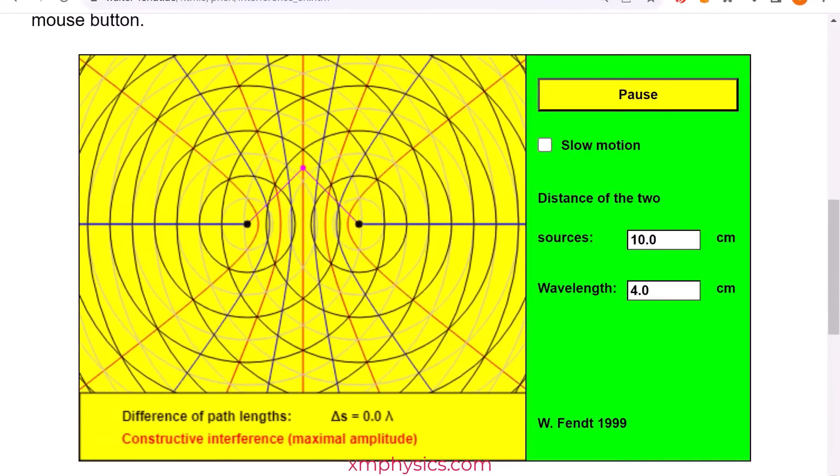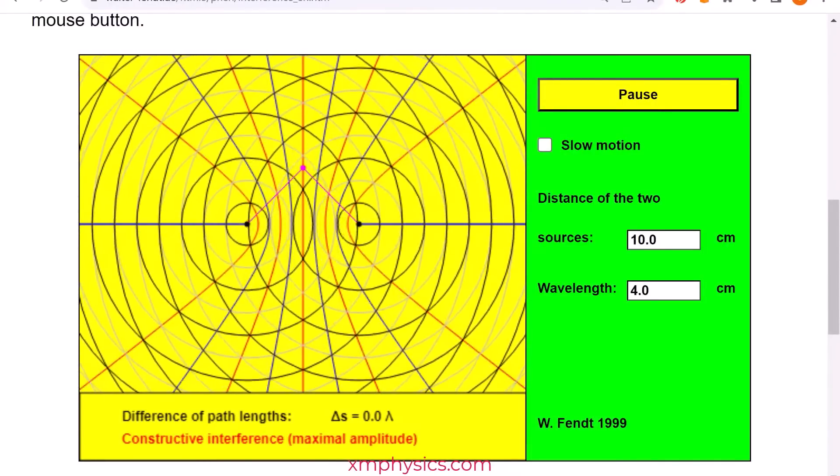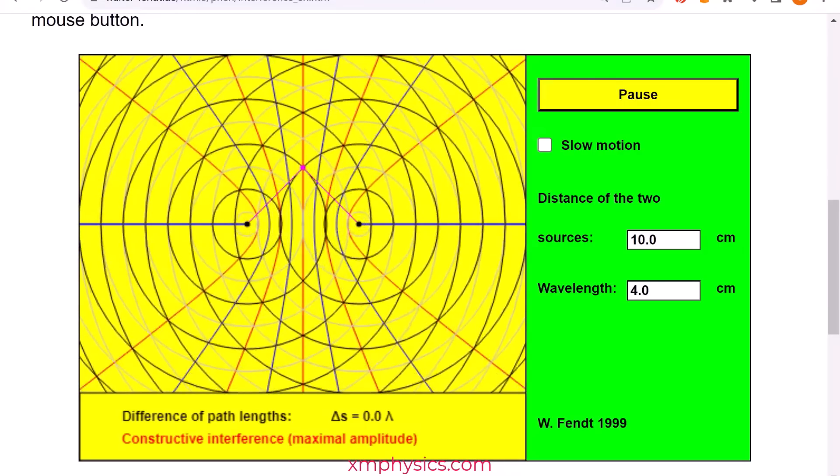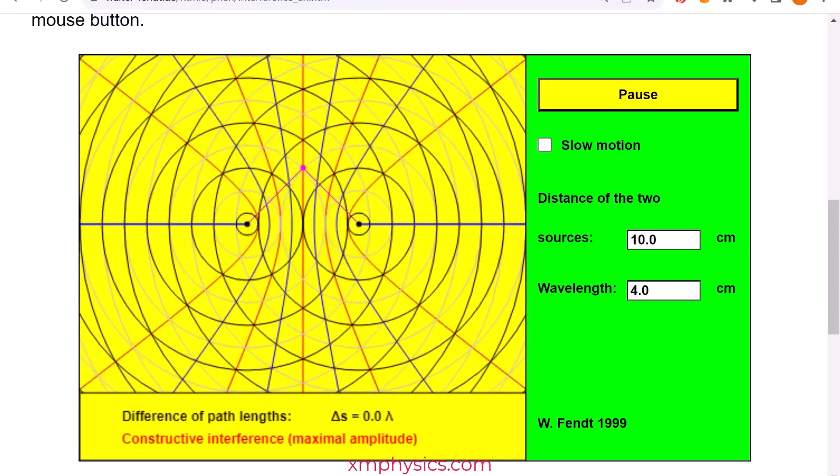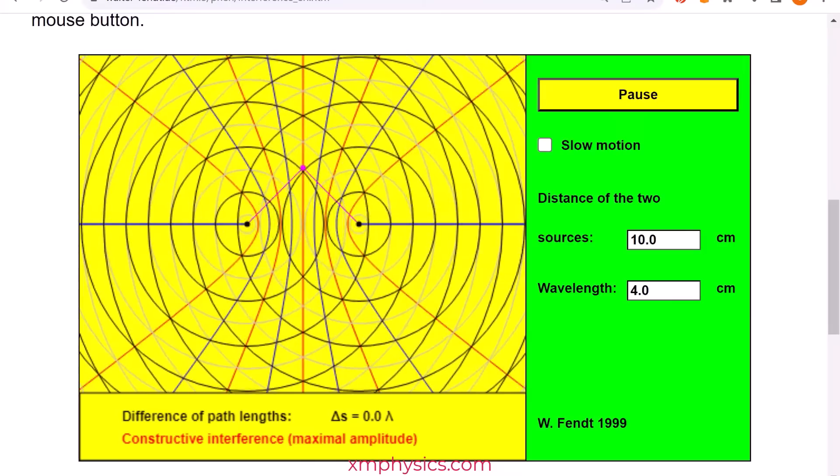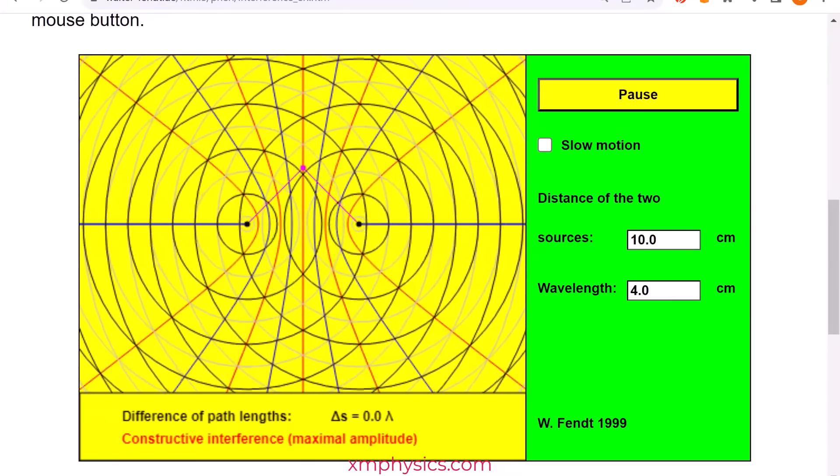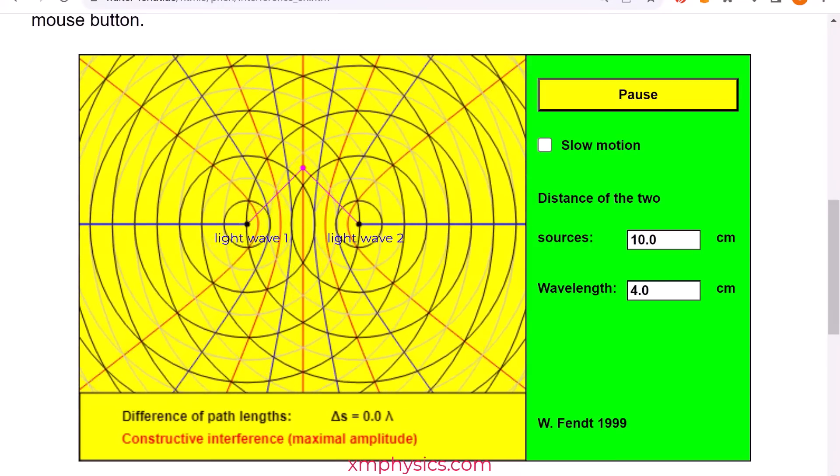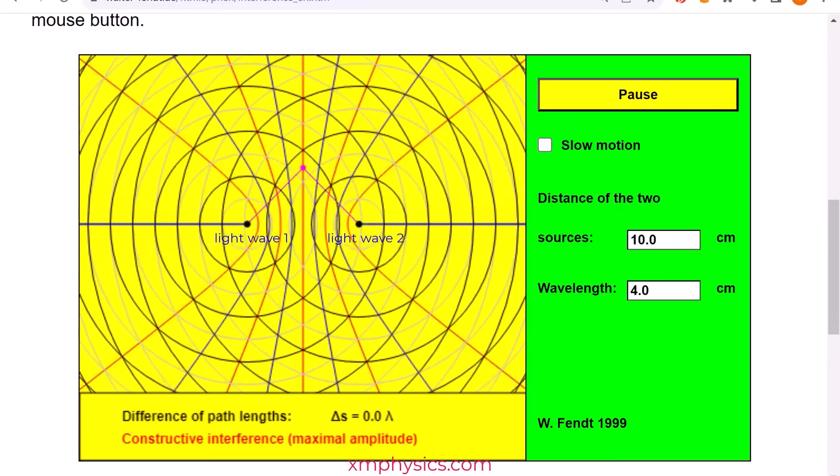So the double slit experiment is an example of two waves interfering with each other. In the Ripper Tank experiment, we had two water waves interfering with each other, resulting in a formation of antinodal and nodal lines. In the double slit experiment, we have two light waves, one from each slit, and the two light waves interfere with each other.